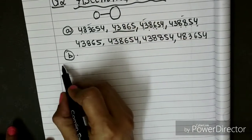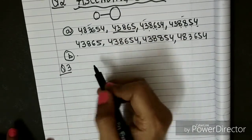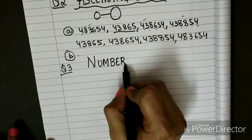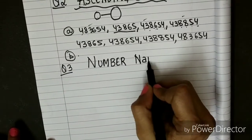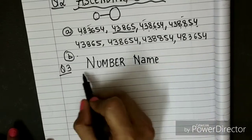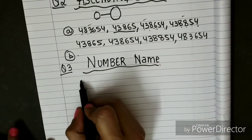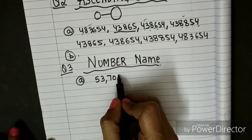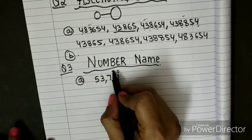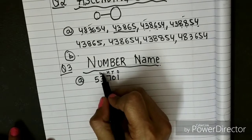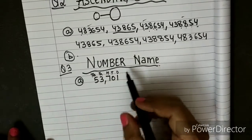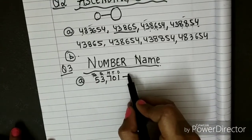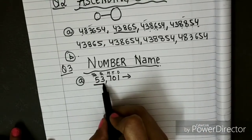Now I am going to move to question number 3: you have to write the number name. This is very easy and it is a favourite for many children. Let's do the first part. The number is 53,701. First of all, it is very necessary to label the places. I have written the places — now it is very easy. You read off and write the number name.